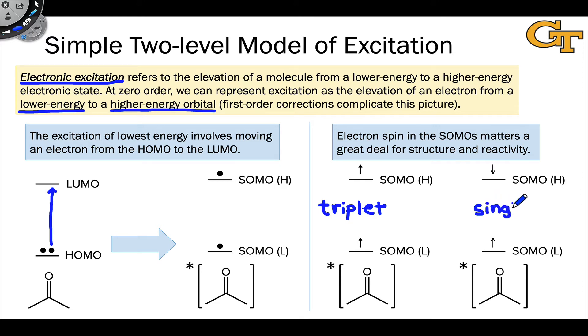All ground state organic molecules, with very few exceptions, are singlets because electrons are paired, and paired electrons must have opposite spins according to the Pauli exclusion principle. Excited states, however, may be singlets or triplets, now that we have two half-filled or singly-occupied molecular orbitals. This simple two-level model of excitation is going to take us very far in understanding the structures and dynamics of organic excited states. It's worth committing to memory how we represent excited states as having singly-occupied molecular orbitals.